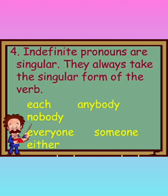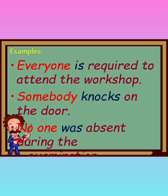Rule number four: indefinite pronouns are singular. Indefinite pronouns include: each, nobody, everyone, either, neither, anybody, someone, somebody, everybody — they always take the singular form of the verb. 'Everyone is required to attend the workshop' — everyone means each and every person, one person, that's why 'is,' a singular verb. 'Somebody knocks on the door' — somebody means any one person, so we add S to the verb: 'knocks.' 'No one was absent during the examination' — no one means nobody was absent.